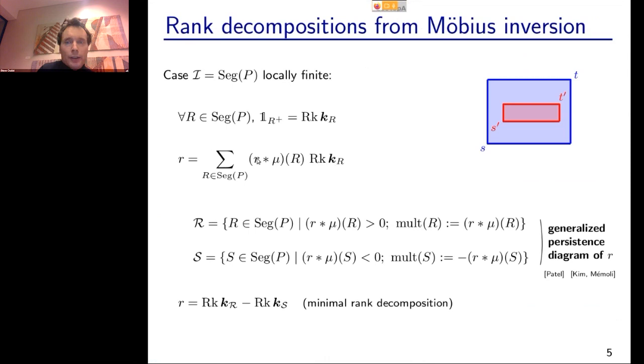This minimal rank decomposition is what Amit Patel and his co-authors call the generalized persistence diagram of the function.